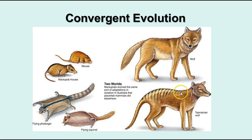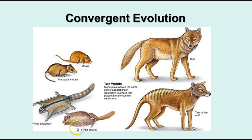Here we have a wolf and a Tasmanian wolf — one is a placental mammal, one is a marsupial, and they look very much alike, living in the same kind of habitat. A couple of other examples: a flying squirrel from the placental group and the flying phalanger from marsupials, and then a marsupial mouse and a placental mouse. They look very similar to each other because they live in similar ways and have similar adaptations.